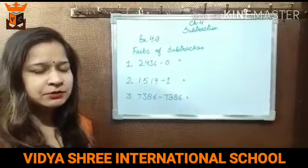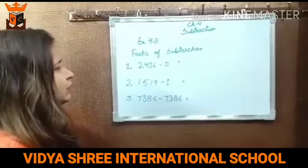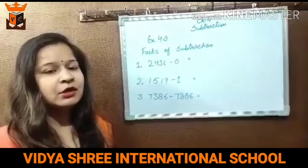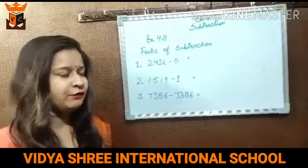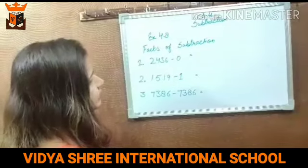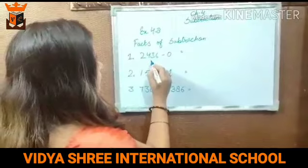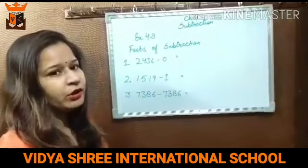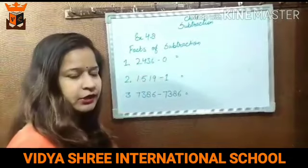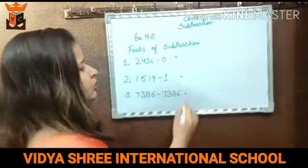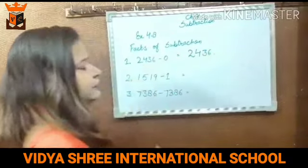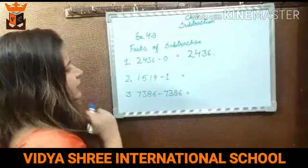There are some facts about subtraction. We have to remember them. The first one is: when we subtract 0 from any given number, we get the number itself. Jab hum kisi number me se 0 deduct karte hai, to answer hame number hi milta hai. 0 ki koi value nahi hoti. Jab hum kisi number me se 0 minus karo ge, to aapko result me number itself milta hai.